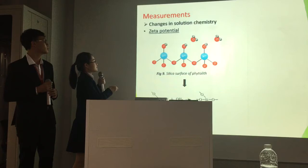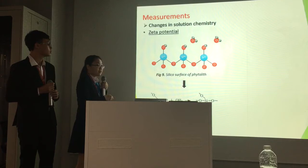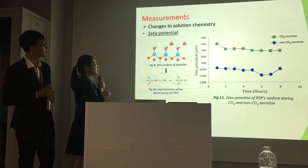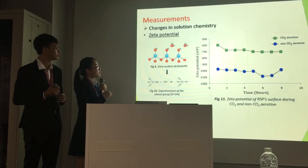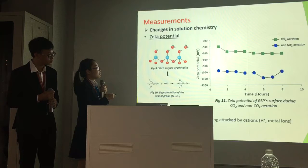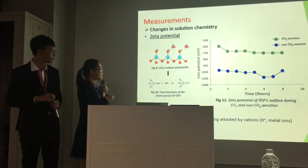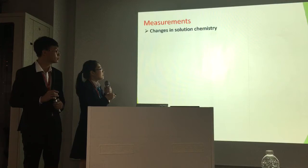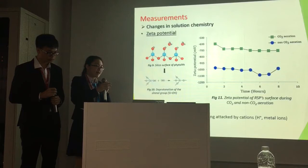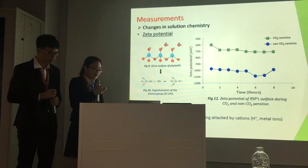The phytolith surface is silica with silanol groups. When the solution is more basic, it makes the phytolith surface more negative. During non-carbon dioxide aeration, phytolith surface is very negative. However, during carbon dioxide aeration, the phytolith charge is more positive. We explain this by the decrease in pH during carbon dioxide aeration, which means less basicity and therefore less negative charge on the phytolith surface. However, the phytolith surface charge during carbon dioxide aeration is still negative enough to capture cations in the solution, such as hydrogen cations. When it captures hydrogen cations, it will increase the pH and sequester more carbon dioxide.